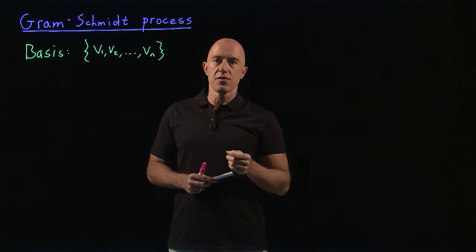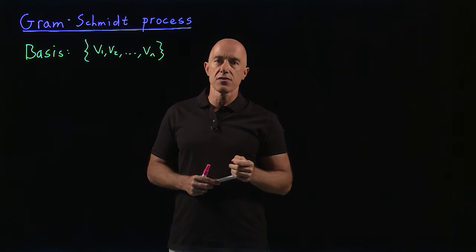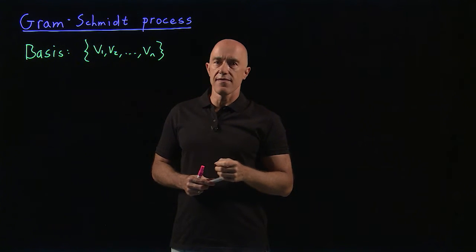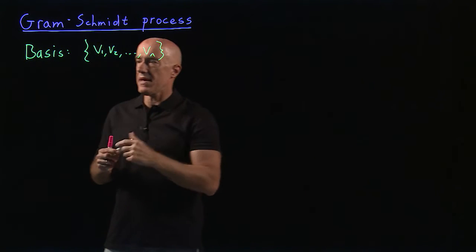The Gram-Schmidt process then gives us an algorithm for converting this ordinary basis set into an orthonormal basis set. By orthonormal, that means each vector in the set is orthogonal to every other vector. And they all have unit length, unit norm. So this is our basis.